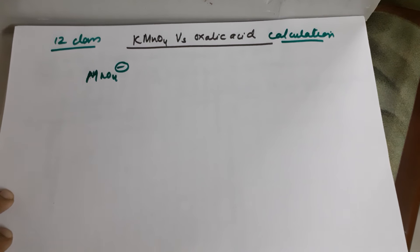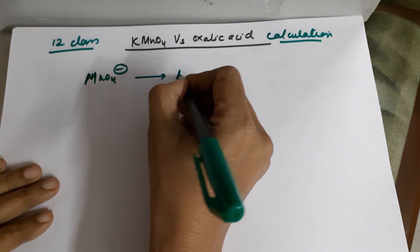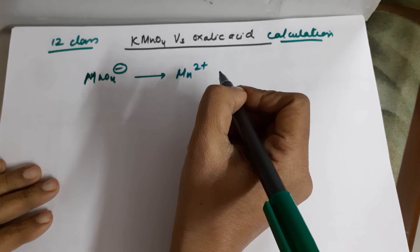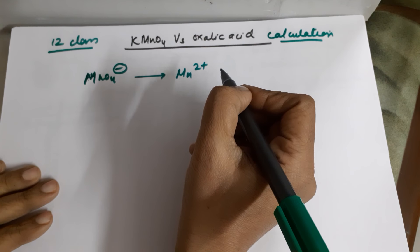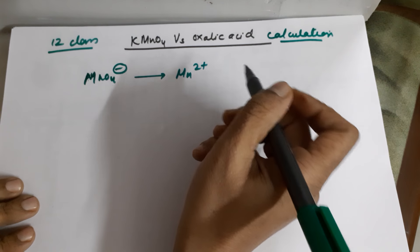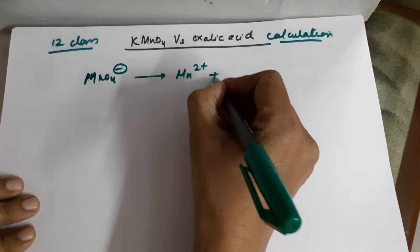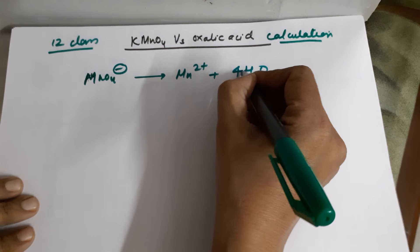Before we go to the calculation part, we need to know what reaction is taking place, because your formulas are derived from the reactions. KMnO4 changes into Mn²⁺ during this titration because you are using a highly acidic medium by using one test tube full of dilute sulfuric acid per titration. Balancing this: oxygens are balanced by water. You have 4 oxygens, so 4 water molecules.